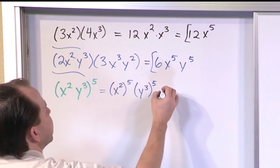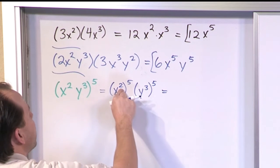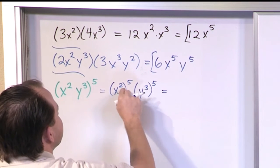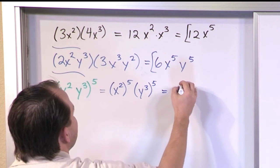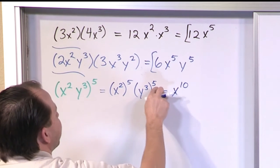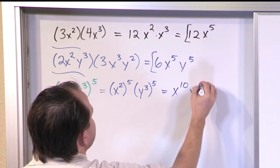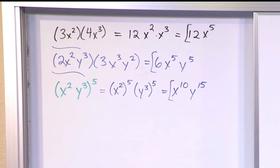Now that we have it written out like this, you can see that for the first one you have a power raised to a power. So you multiply the powers. 2 times 5 is 10. Here we have 3 times 5, so we're going to get 15. So x to the 10th, y to the 15th. So really you're using things we've learned before in some of these review problems.